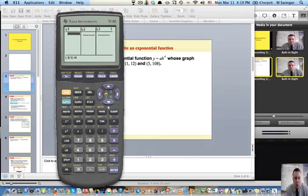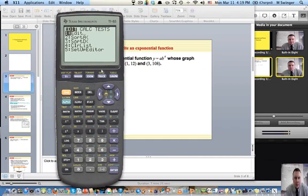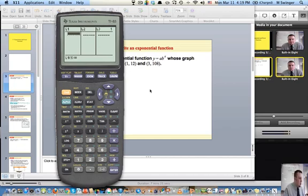So turn it on. Go ahead, stat key. We're going to edit and we're going to type in our list. List one, list two. So here's the values for one, two, three, four, five, six, seven.